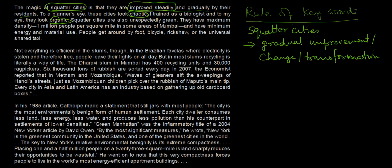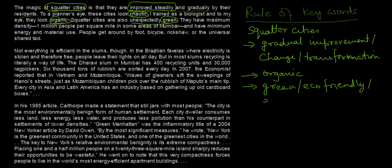Like we call organic growth — all organisms grow steadily and gradually. So organic means there is some amount of order, discipline and growth. So let's note down the word organic as well. Squatter cities are also unexpectedly green. So the next characteristic mentioned is green, which means eco-friendly or environment-friendly.